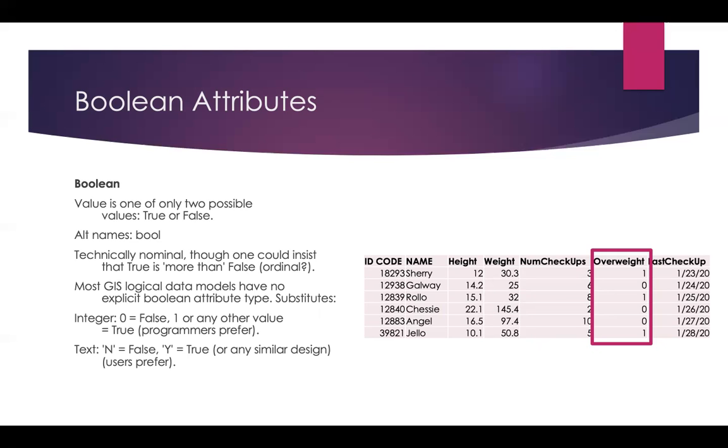Technically, these are nominal data, but I also might consider these ordinal since you might order true values as higher than false values. Most GIS's don't actually have a Boolean attribute type. So usually we either use integers where one is true and zero is false. But you can also have a text field where you use true or false or T and F. The integer data type is a better way to store this type of data.